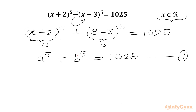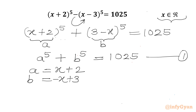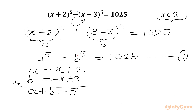Now I will write a equals x+2 and b equals 3-x. Let us add both expressions. So I will get a plus b equals 2 plus 3 equals 5. This equation I will call equation number 2.